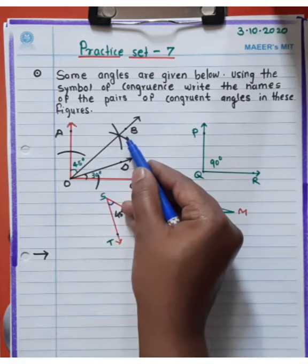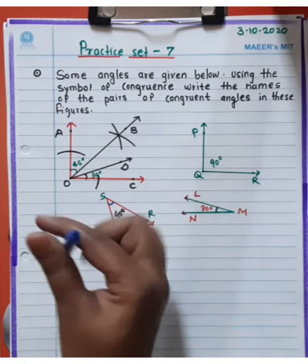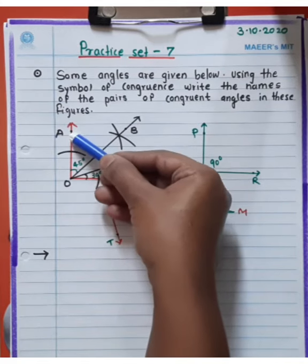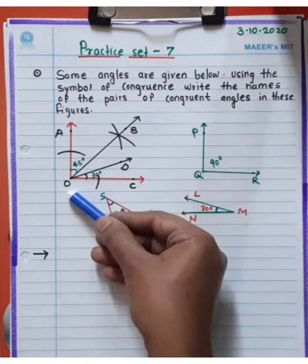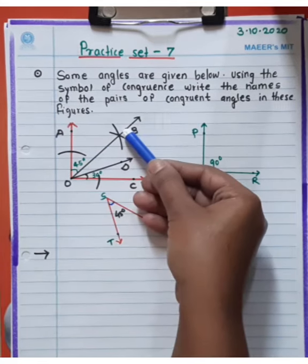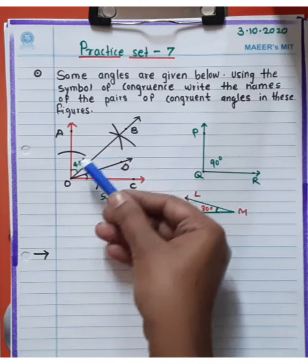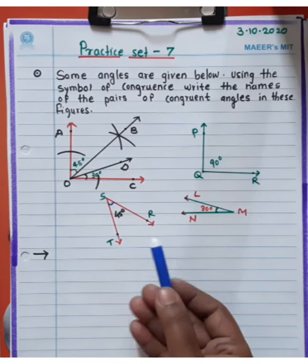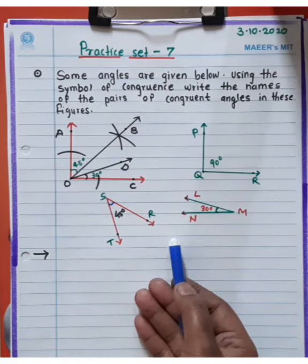Here you can see 45 degrees — angle AOB is 45 degrees. Which other angle also has 45 degrees? It will be congruent to that angle.